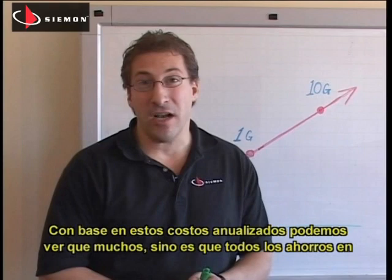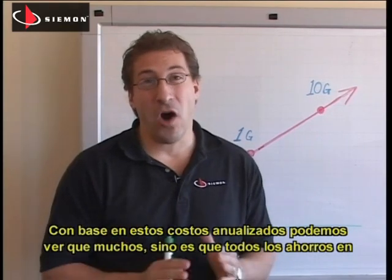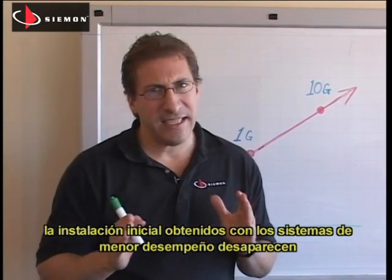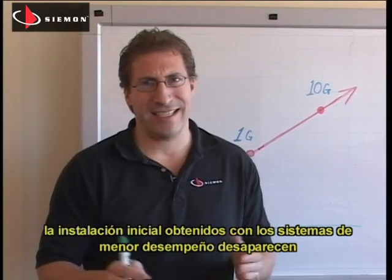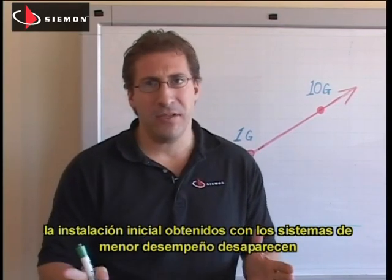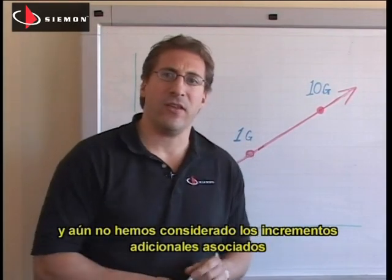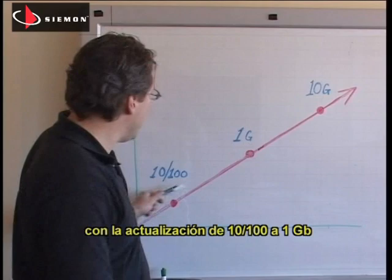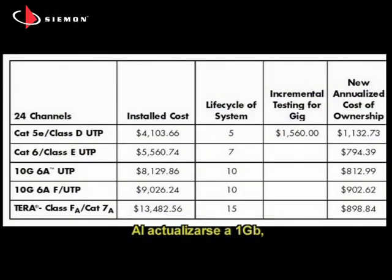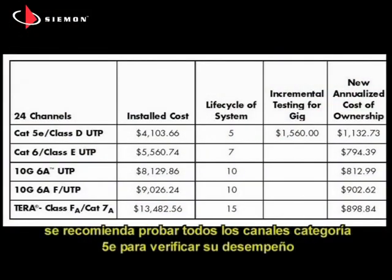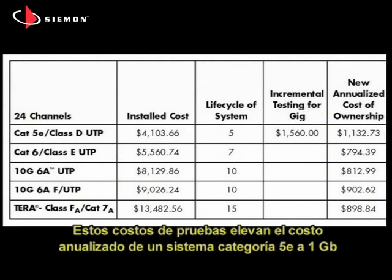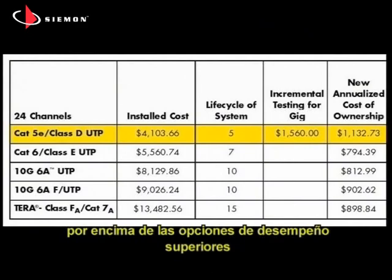Based upon annualized cost, we can see that much if not all of the savings gained from installing a lower performing, lower cost cabling system up front disappears over the life cycle of that cabling system. And that's before considering the incremental cost to upgrade going from 10/100 to 1 gigabit. When upgrading to 1 gig, it is recommended that Category 5E channels be fully tested to verify their performance. Including this additional cost of testing will raise the annualized cost of a Category 5E system at 1 gig beyond that for all higher performing options.